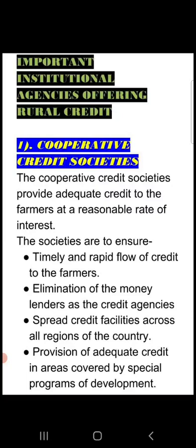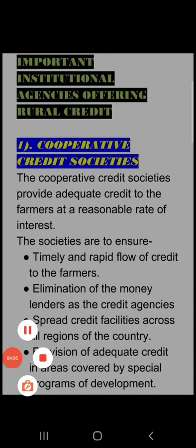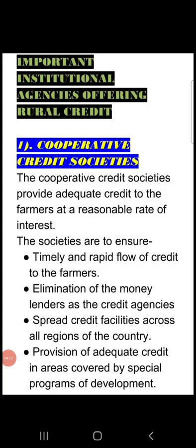The important institutional agencies offering rural credit — number one is cooperative credit societies. These provide adequate credit to farmers at a reasonable rate of interest. Their purpose is to ensure timely and rapid flow of credit to farmers, elimination of moneylenders, spreading credit facilities to all regions of the country, and provision of adequate credit in areas covered by special programs of development.